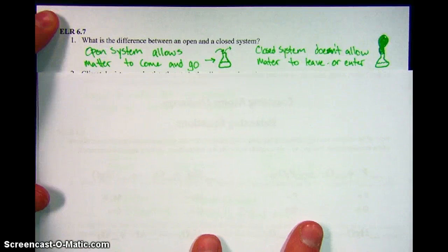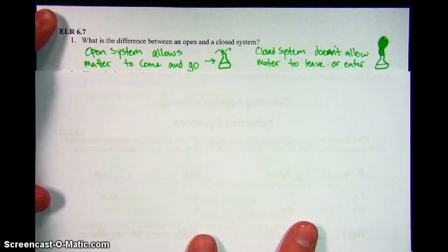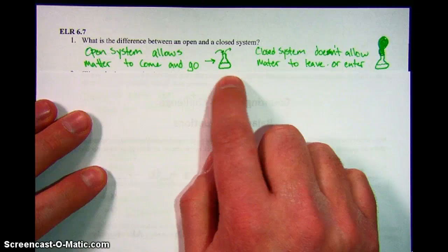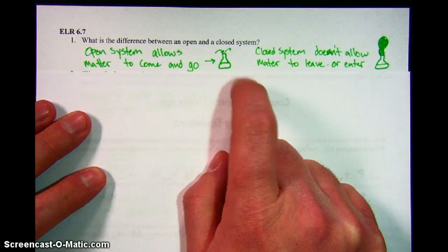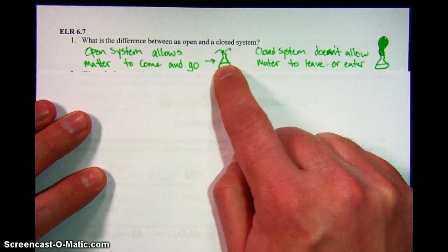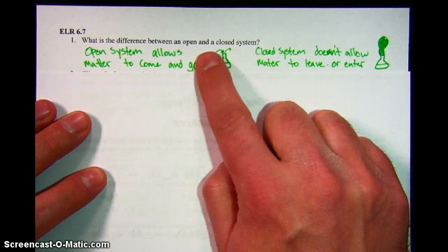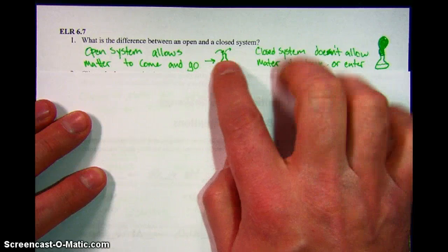In an open system, it allows matter or mass to come and go as it will. So in our experiment when we did the Erlenmeyer flasks, the open system was the one without the balloon. That meant that any of the gases that were made on the inside could come out, or anything that was in our room could go in, and there was nothing to stop it.